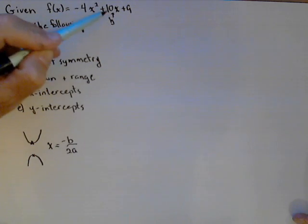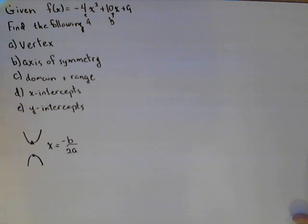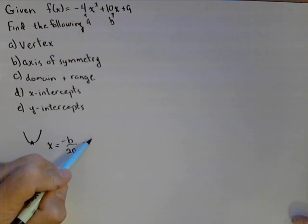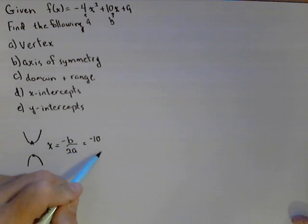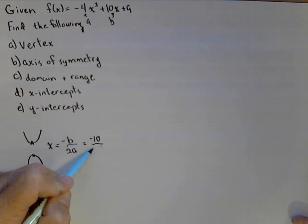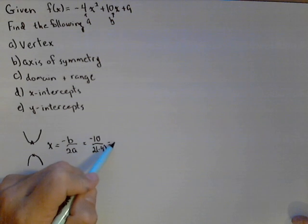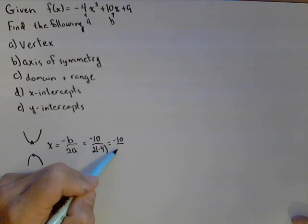Well, b is 10, a is negative 4. So to find the vertex, what we're going to do is apply this. So negative b over 2a, so negative 10 over 2 times negative 4 equals negative 10 over negative 8.